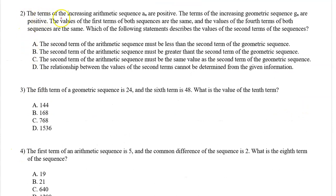Number 2. The terms of the increasing arithmetic sequence a_n are positive. The terms of the increasing geometric sequence g_n are also positive. The values of the first terms of both sequences are the same, and the values of the fourth terms of both sequences are also the same. Which of the following statements describes the values of the second terms of the sequences?